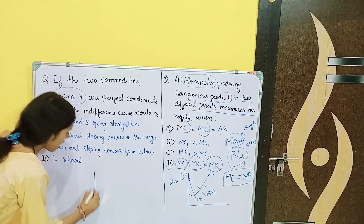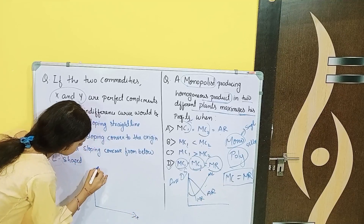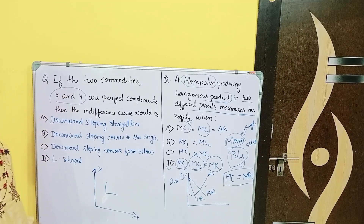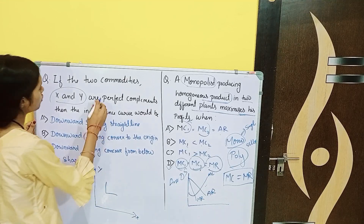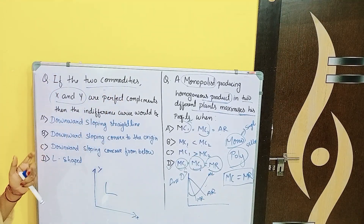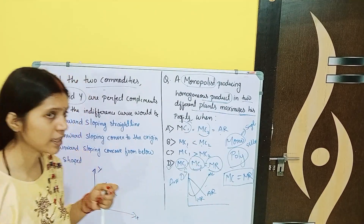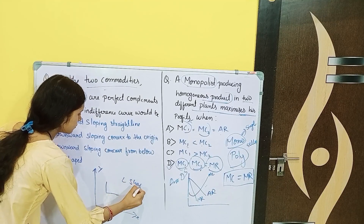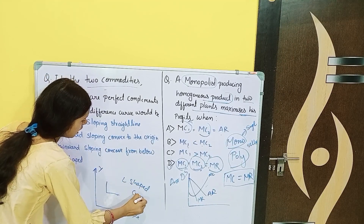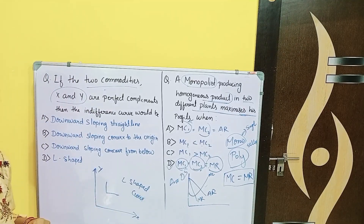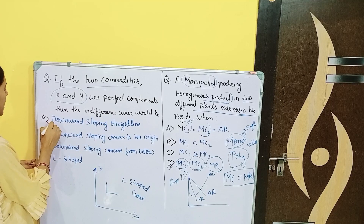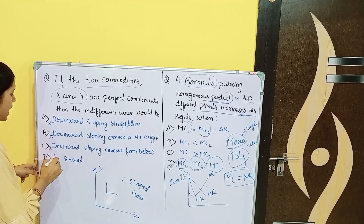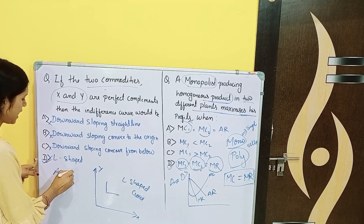You would have an X axis and Y axis forming an L-shaped curve. The indifference curve would be L-shaped. Downward sloping straight line is wrong. Downward sloping convex to the origin is wrong. Downward sloping concave from below is wrong. L-shaped curve is correct. The answer is D — L-shaped curve.